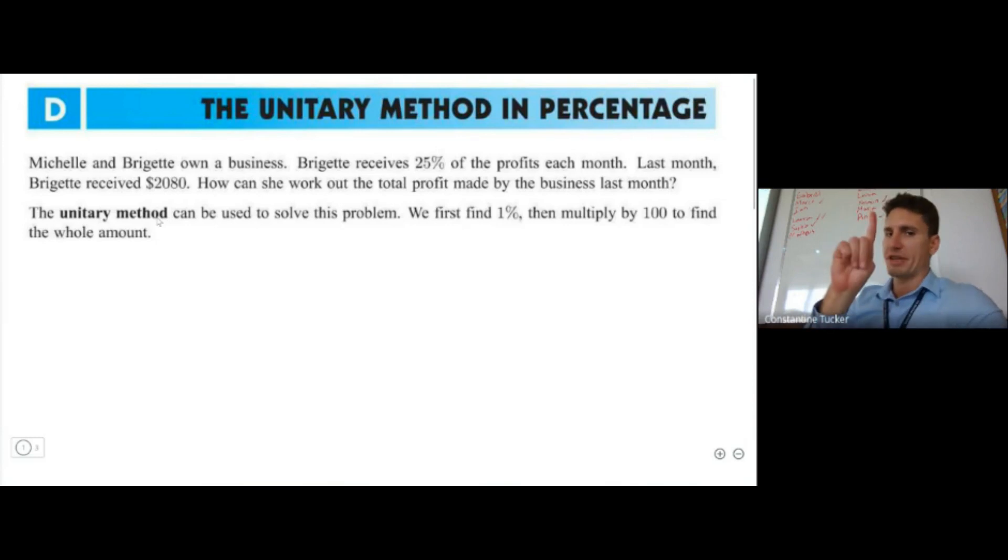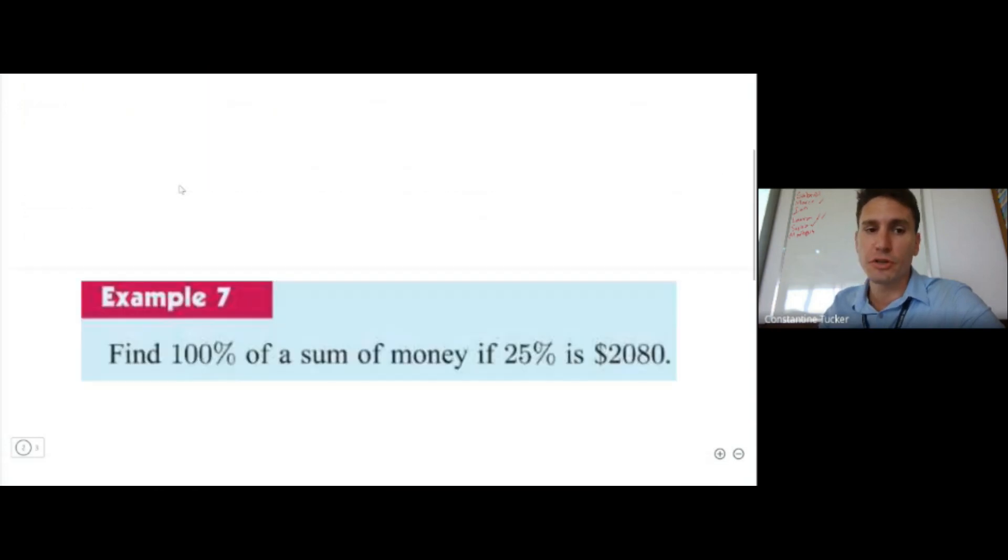Let me explain: in this method, the unitary method, we find what 1% is first. Unitary comes from one, it comes from unit—that's why we call it the unitary method. So we first find what 1% is, and then we simply multiply by 100 to find the whole amount.